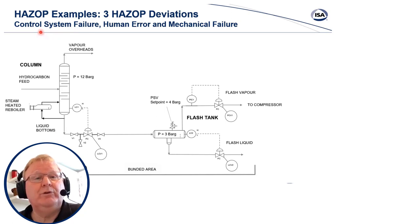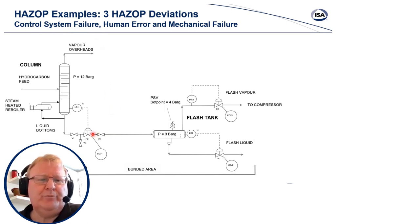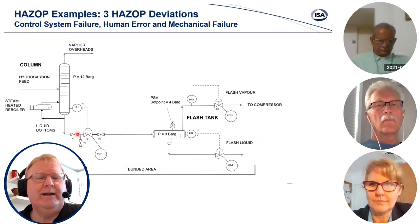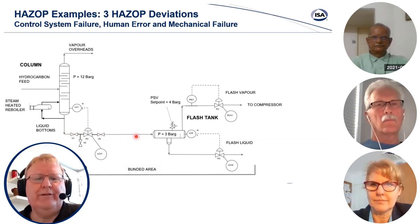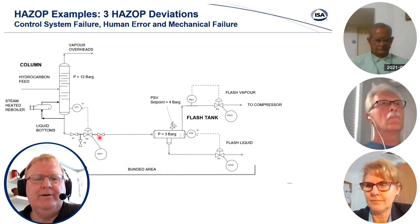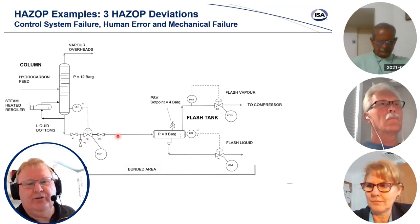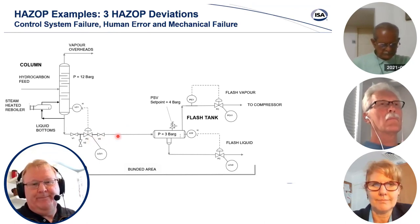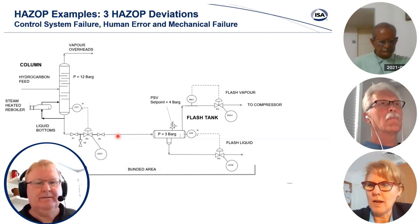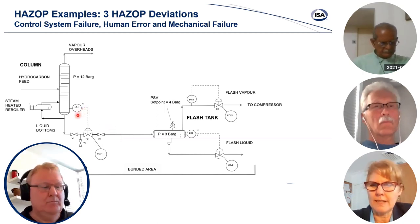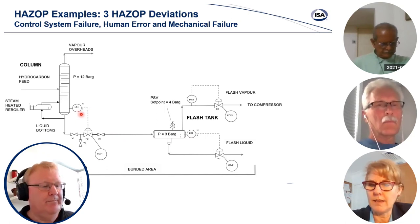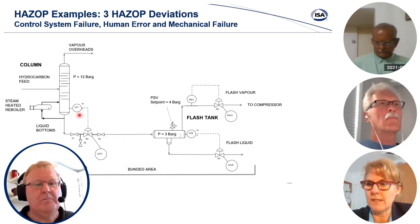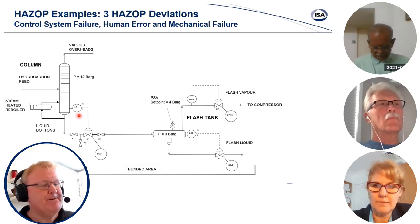Initially we're going to explore a control system failure deviation — specifically, what could cause high flow in the column bottoms pipe. In our HAZOP reenactment: LC1, which is controlling the level, could be reading too high, thinking it's got level when it doesn't, maybe due to calibration faults.